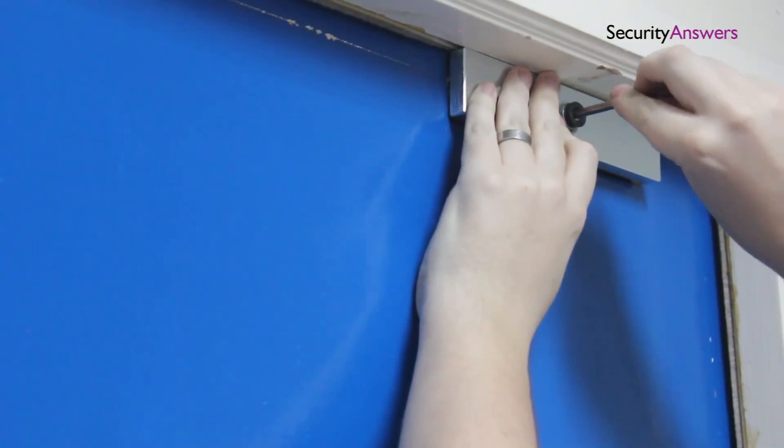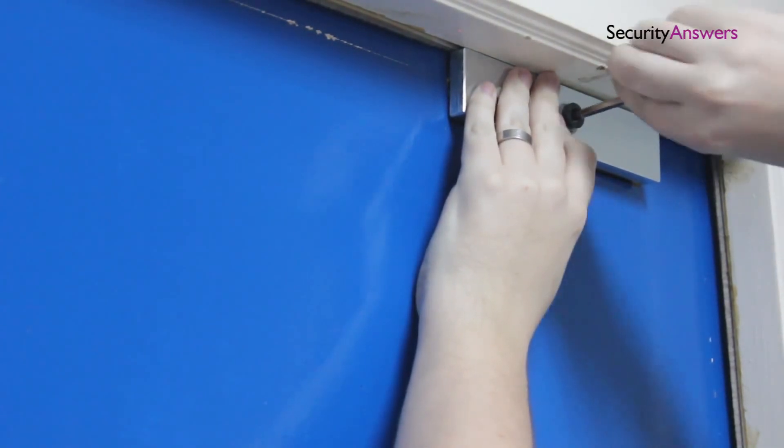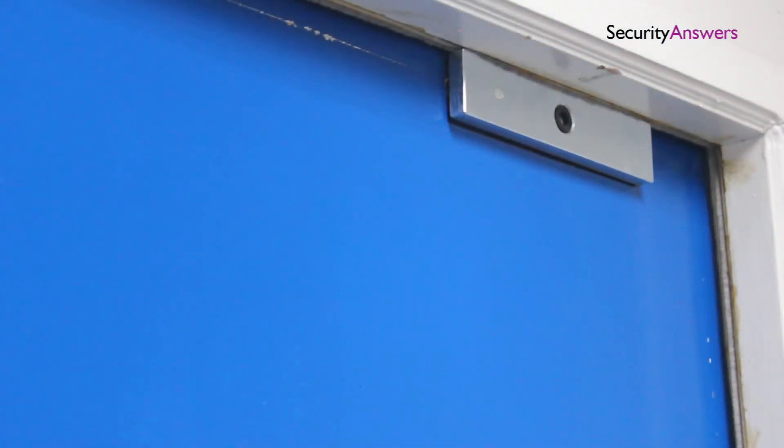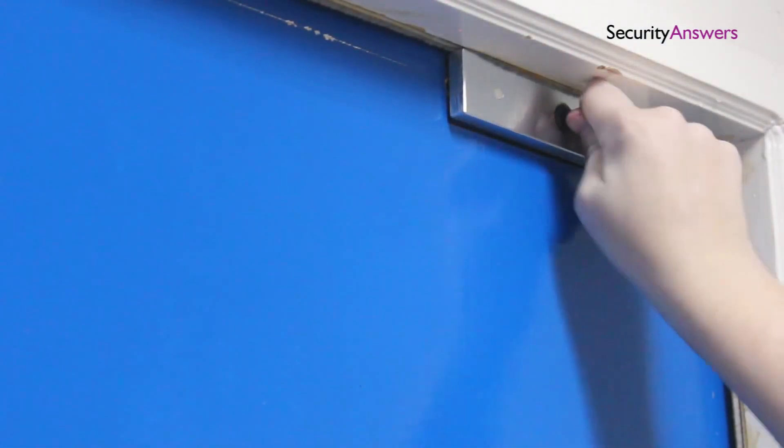Before you do your final tightening of your screws, close the door to double check the fitting of your lock. If everything is okay, go ahead and tighten your screws.